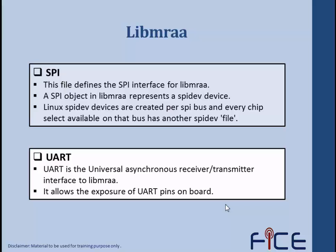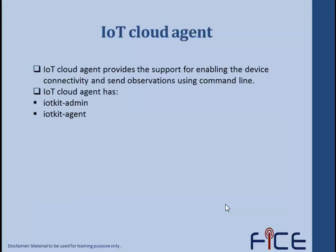UART is the asynchronous receiver transmitter interface to libmraa. It allows the exposure of UART pins on board. Libmraa provides various UART pins available on our board to enable communication between different modules. On our Galileo board, we have two UARTs: UART0 and UART1. IO0 and IO1 are reserved for receiver and transmitter respectively for UART0, while IO0 and IO3 are reserved for TX and RX respectively for UART1.